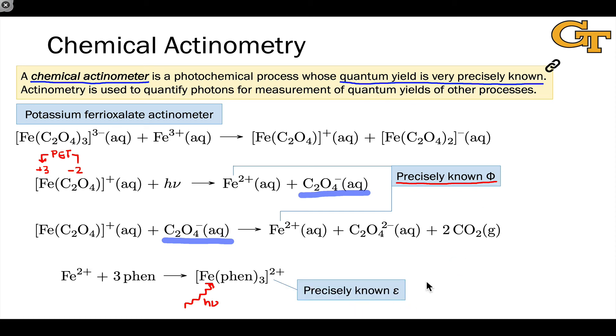We also precisely know the molar absorptivity or the molar absorption coefficient of this iron-phenanthrolene complex. And that's key in order to precisely measure the amount of iron that's generated. So how do we take this rather complicated chemical system and insert it into an experiment where we're trying to measure a different quantum yield?